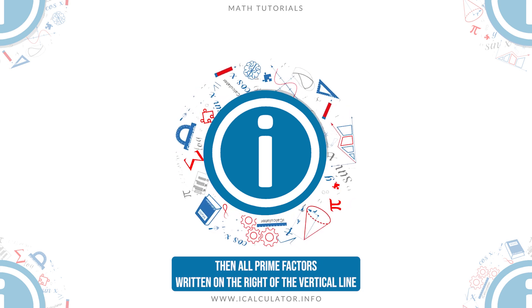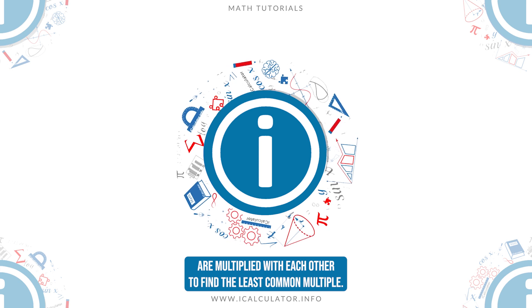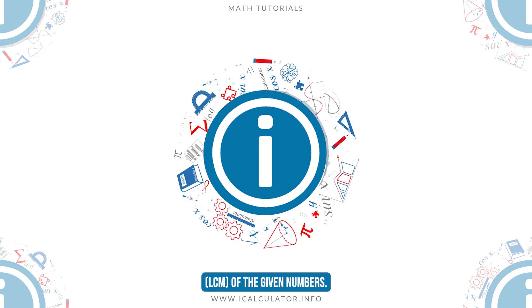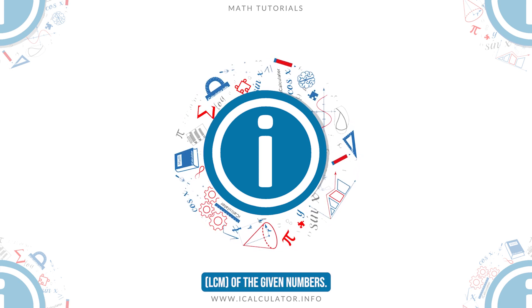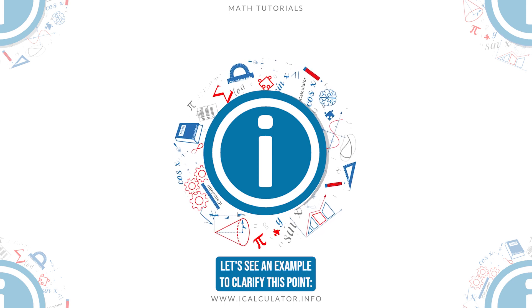All prime factors written on the right of the vertical line are multiplied with each other to find the least common multiple, LCM, of the given numbers. Let's see an example to clarify this point.